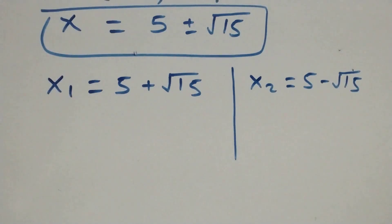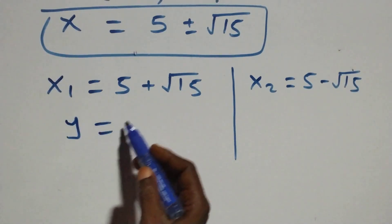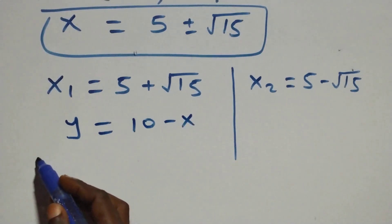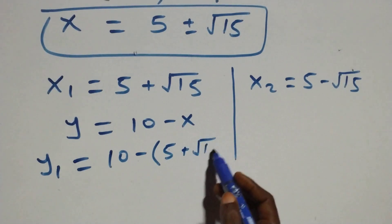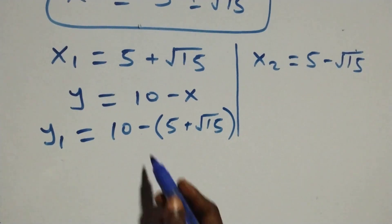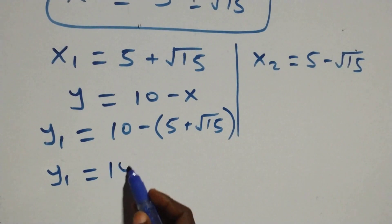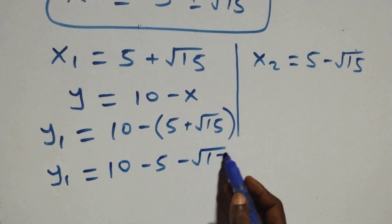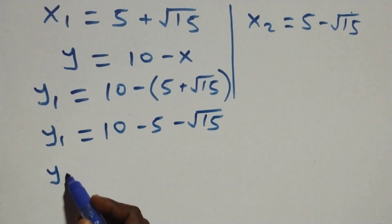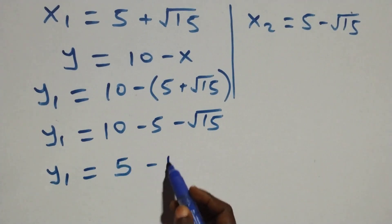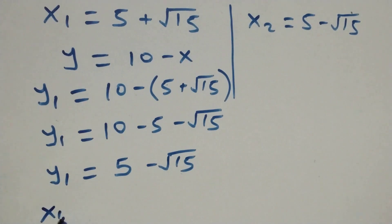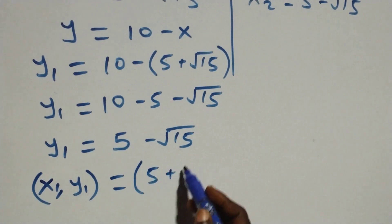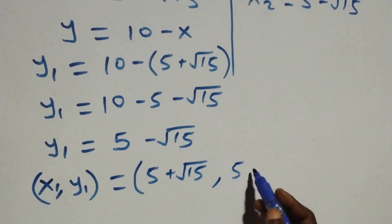To get the value of y from equation 3, it is y equals to 10 minus x. On this side we have y1 equals to 10 minus x1, which is 10 minus (5 plus root 15), giving us 10 minus 5 minus root 15. That is, y1 equals to 5 minus root 15. The first set of solutions, written as (x1, y1), is (5 plus root 15, 5 minus root 15).